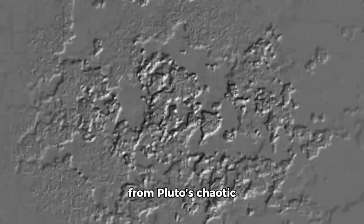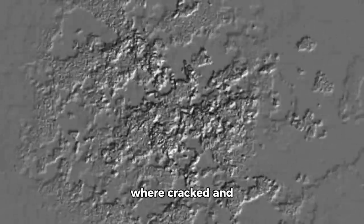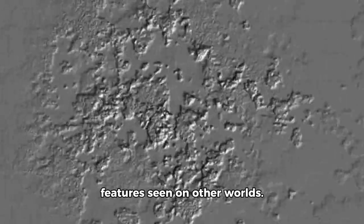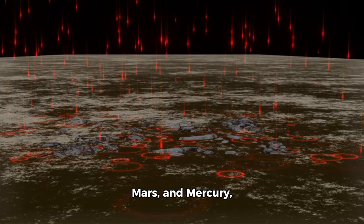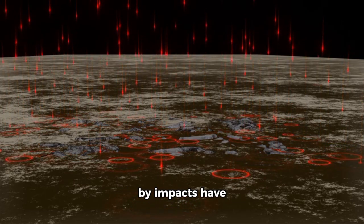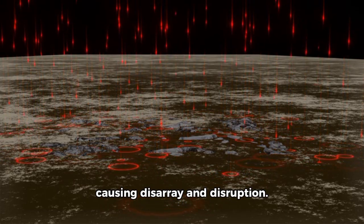Further evidence comes from Pluto's chaotic terrain on its far side, where cracked and distorted landscapes resemble impact-broken features seen on other worlds. For instance, on Europa, Mars, and Mercury, seismic waves generated by impacts have concentrated on the opposite hemisphere, causing disarray and disruption.